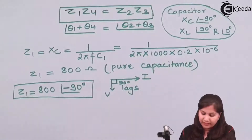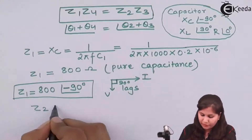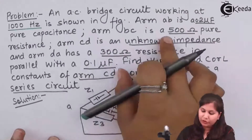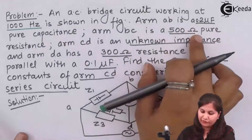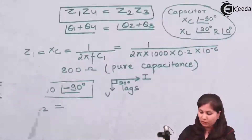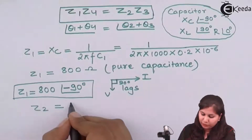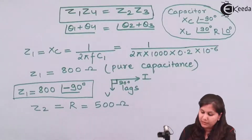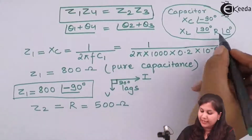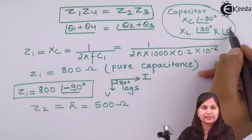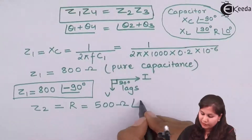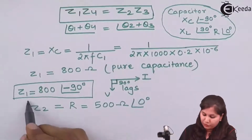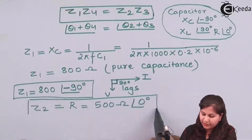Z2 is a pure resistance. In the question it is given as 500 ohms, so Z2 = 500 ohms. The phase angle across a resistance is 0 degrees, so Z2 = 500∠0°.